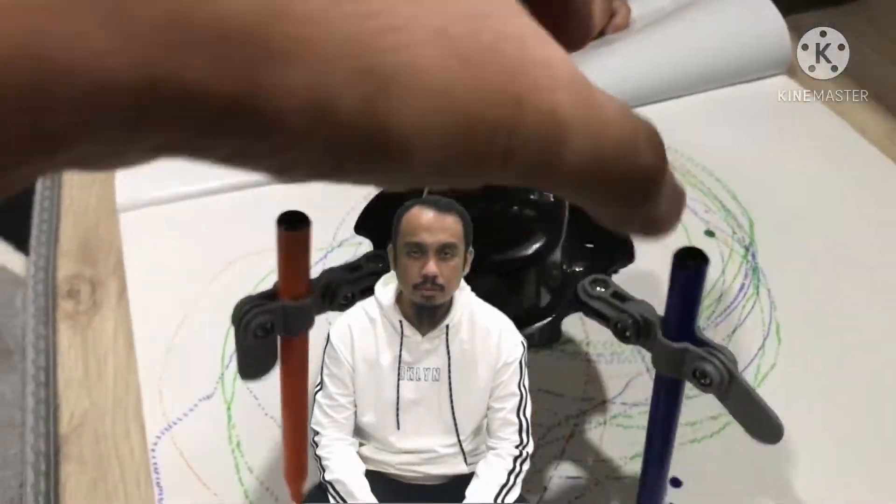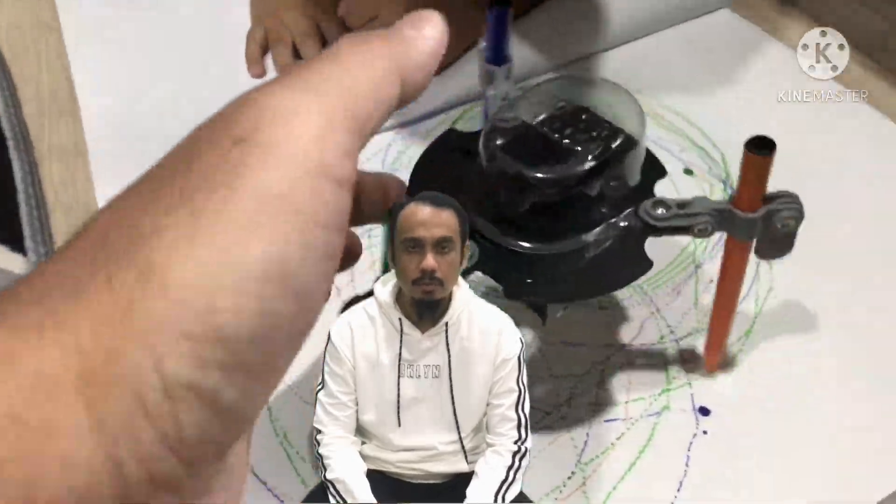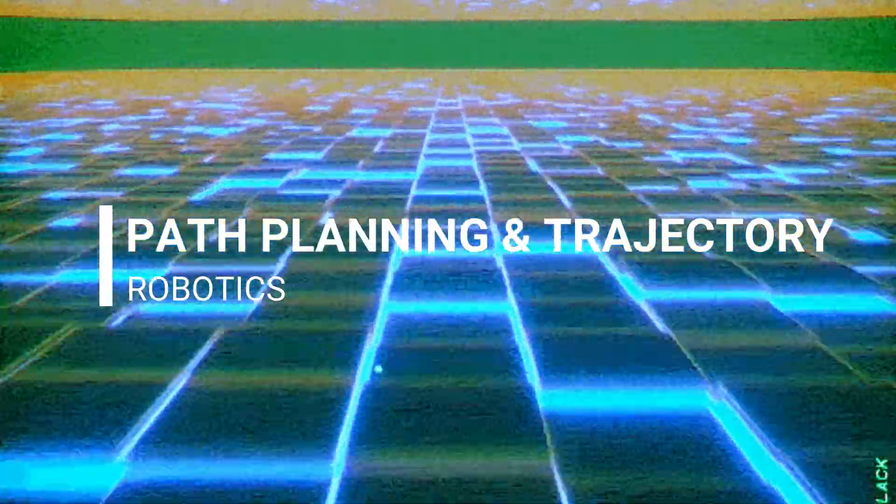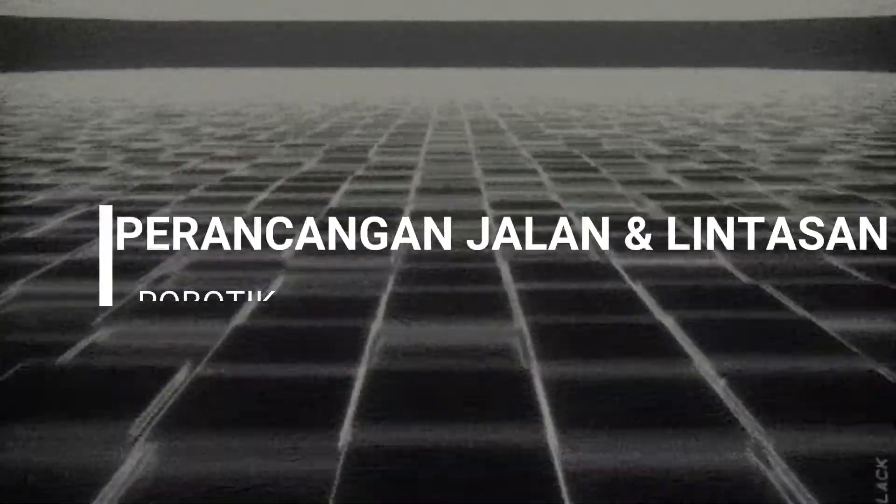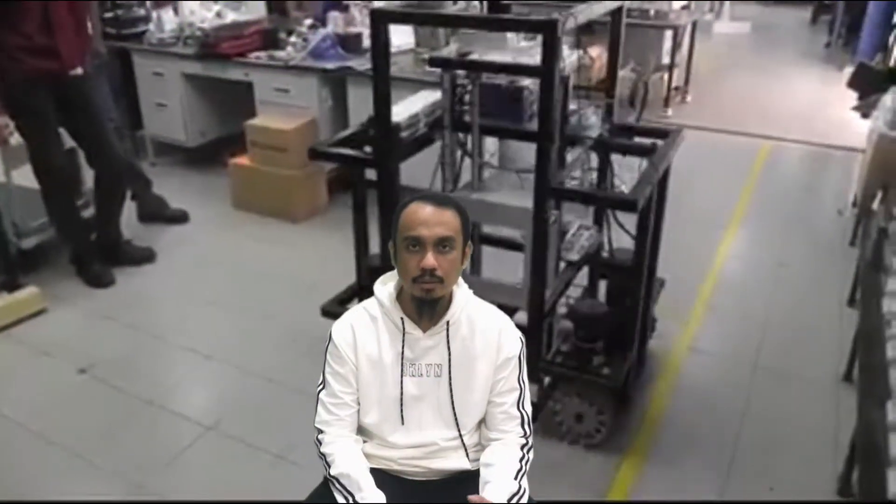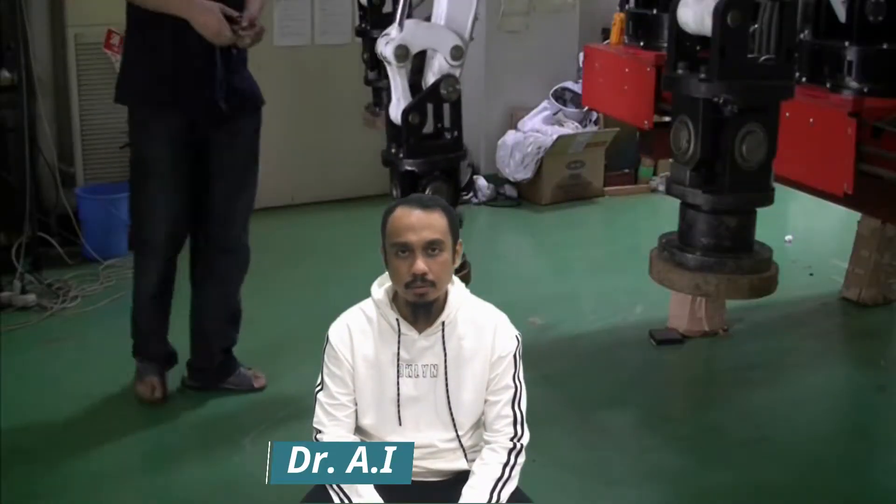Assalamualaikum. For this video I will talk about robot path planning and trajectory. This part is the first level in robot control structures and this will be the last chapter in robot fundamentals.